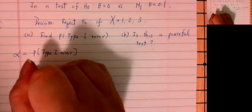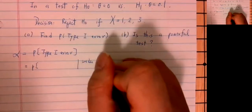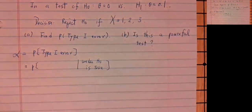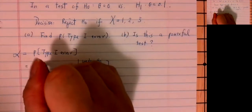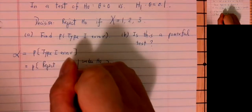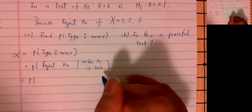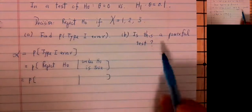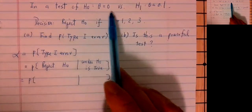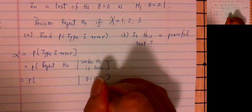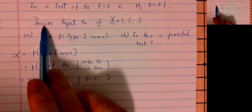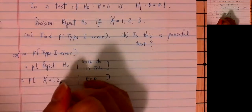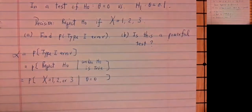Type 1 error, by definition, is the probability of rejecting H-naught when H-naught is true. H-naught says theta equals 0, so when theta is equal to 0, our decision is to reject H-naught if X equals 1, 2, or 3.